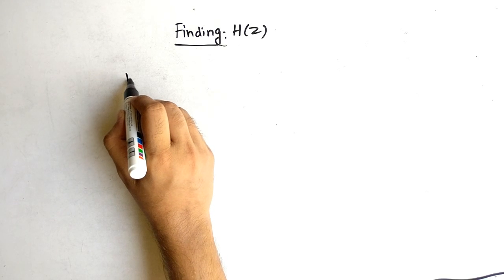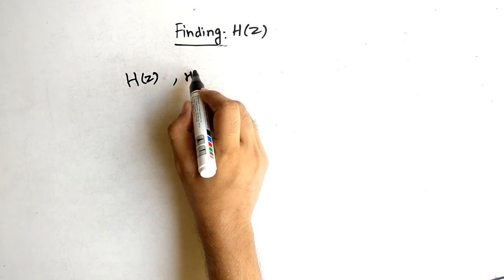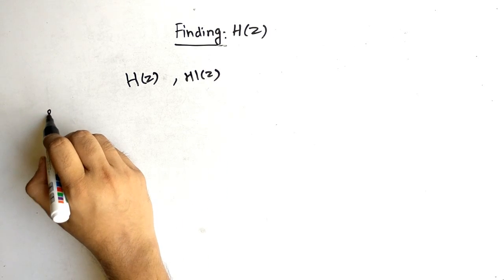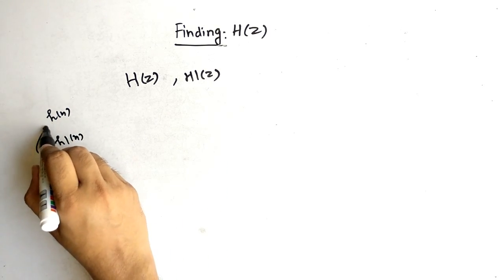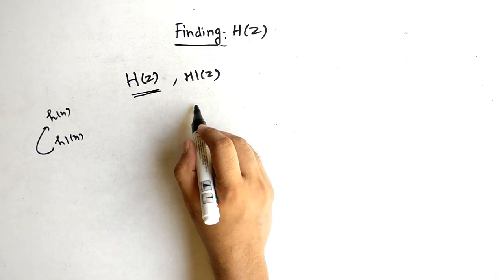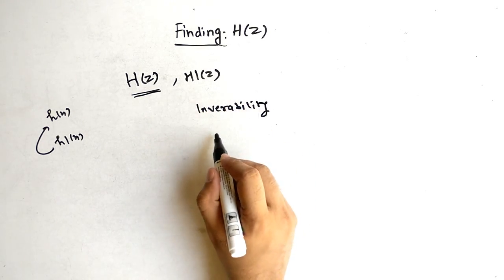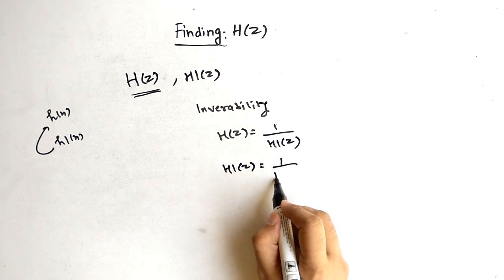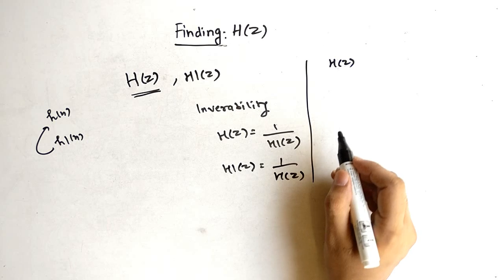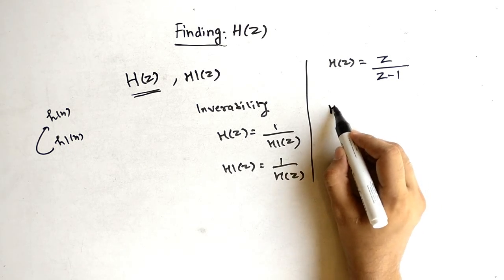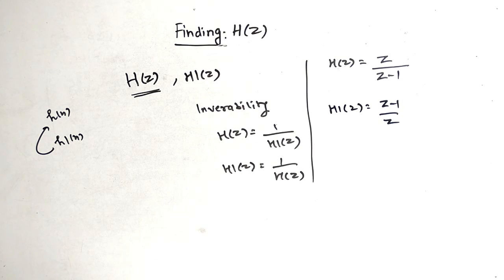Now the relation between H(z) and H1(z): H(z) is the Z-transform of h(n), and H1(n) is the inverse of h(n). Due to the invertibility property, H(z) = 1/H1(z), so H1(z) = 1/H(z). For example, if H(z) = (z+1)/z, then H1(z) = z/(z+1), which equals z^(-1)/(1) — written as (z-1)/z. This is an important type based on invertibility.